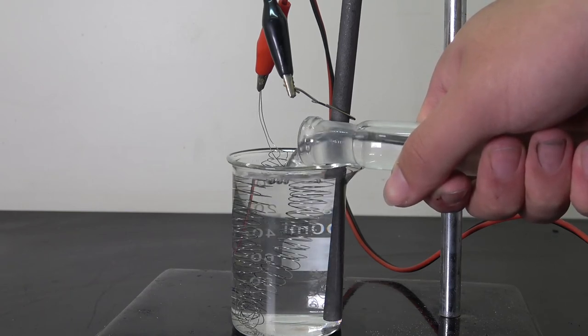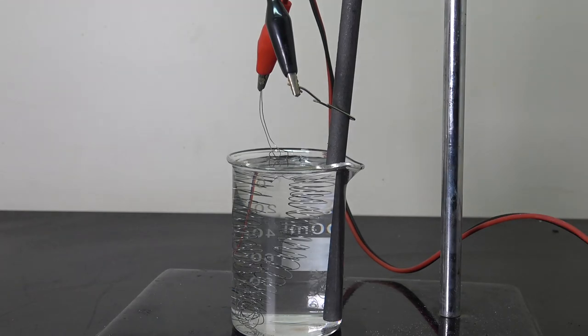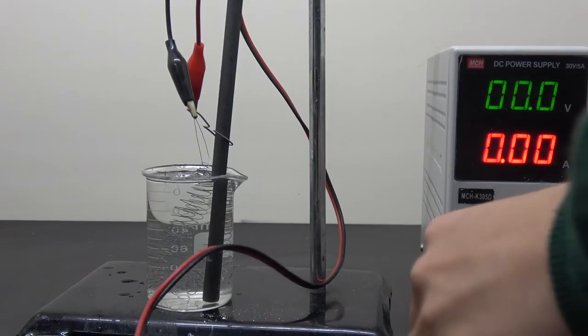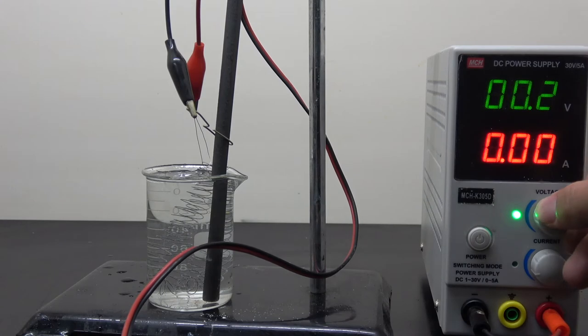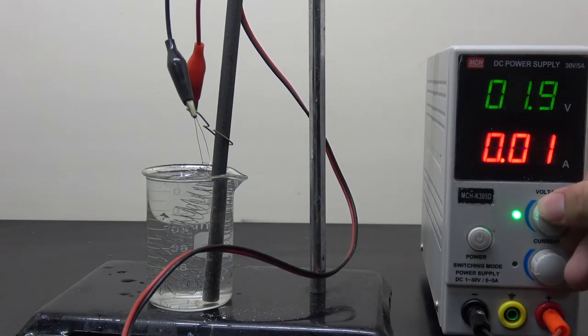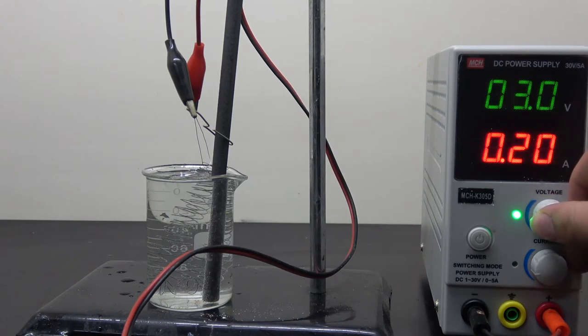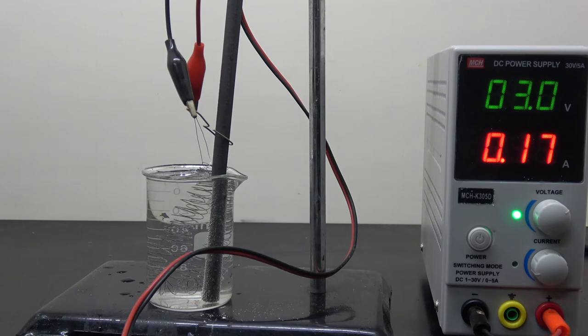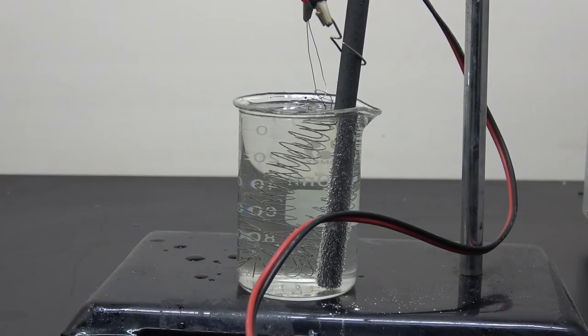I then submerge the electrodes with the acid solution that I just prepared, and adjust the dial so that 0.2 amps of current is passing through the circuit. This serves to remove the oxide layer on the surface of electrodes and expose the fresh metal underneath for later electroplating. Keep the power running for about 10 minutes.